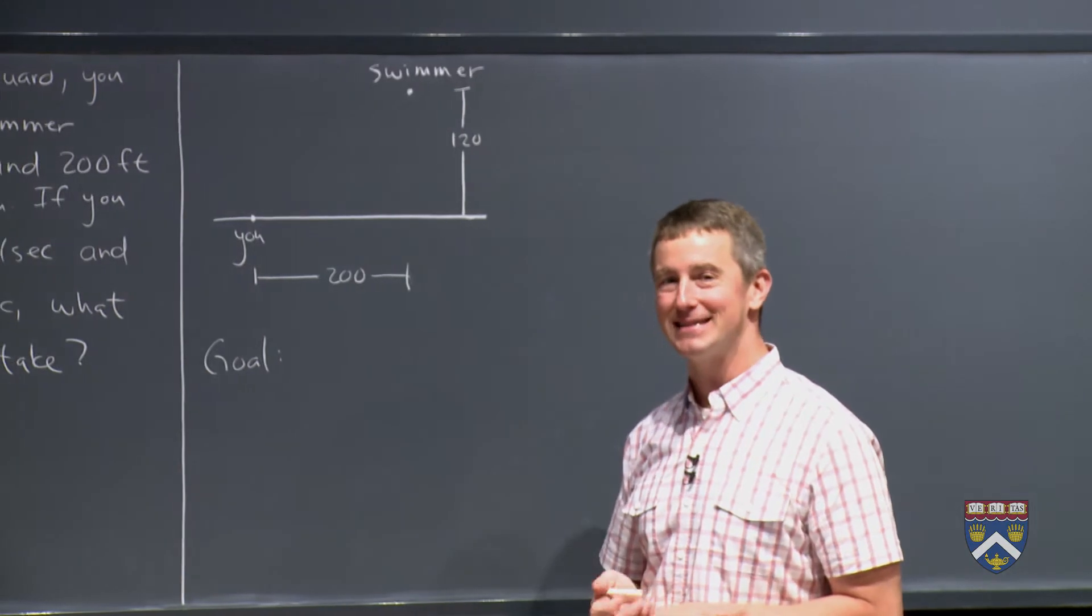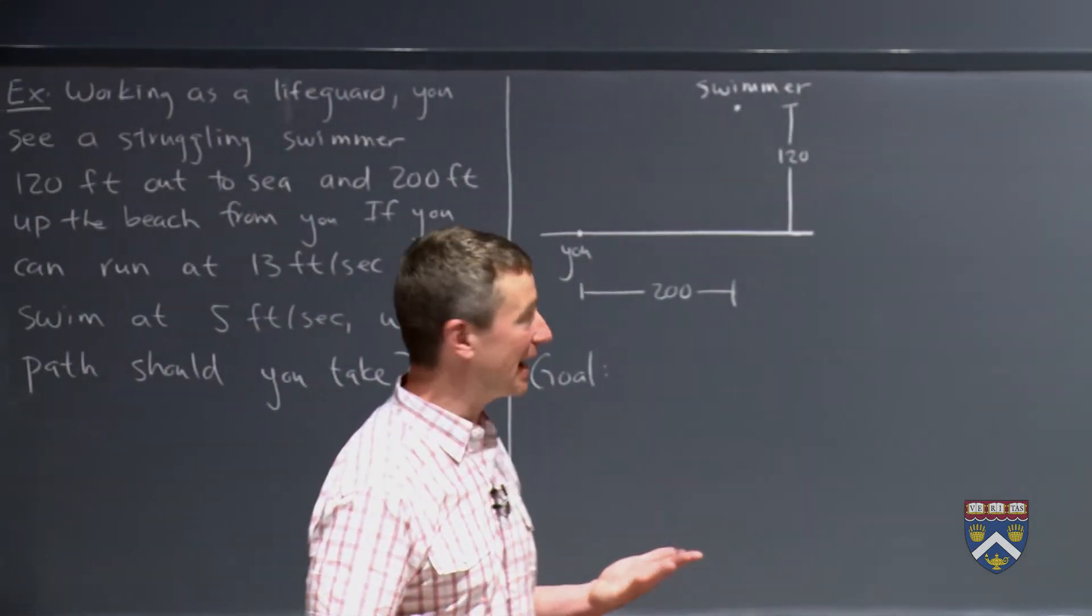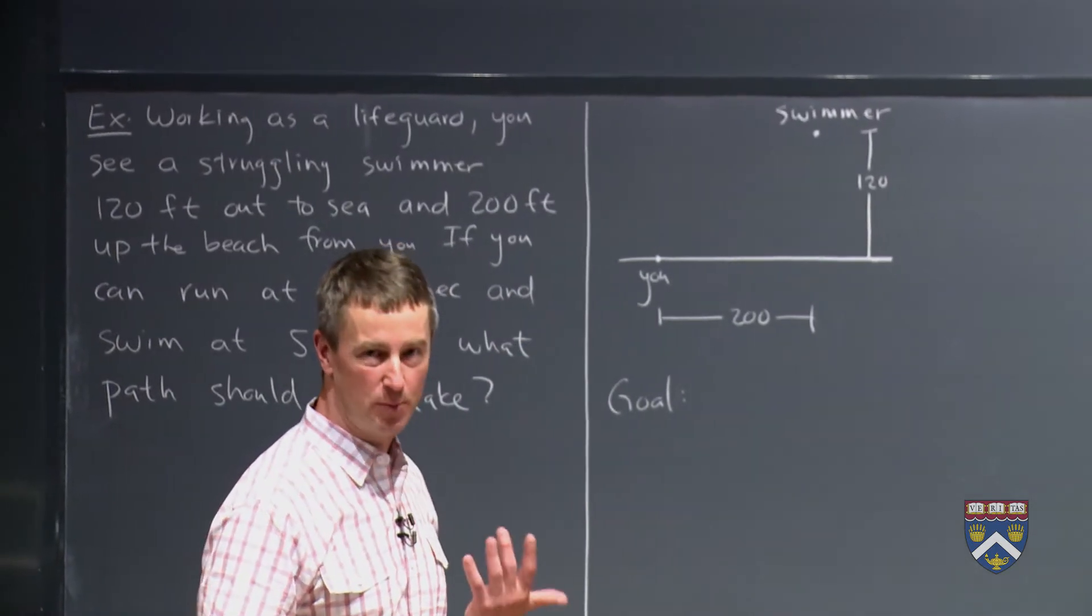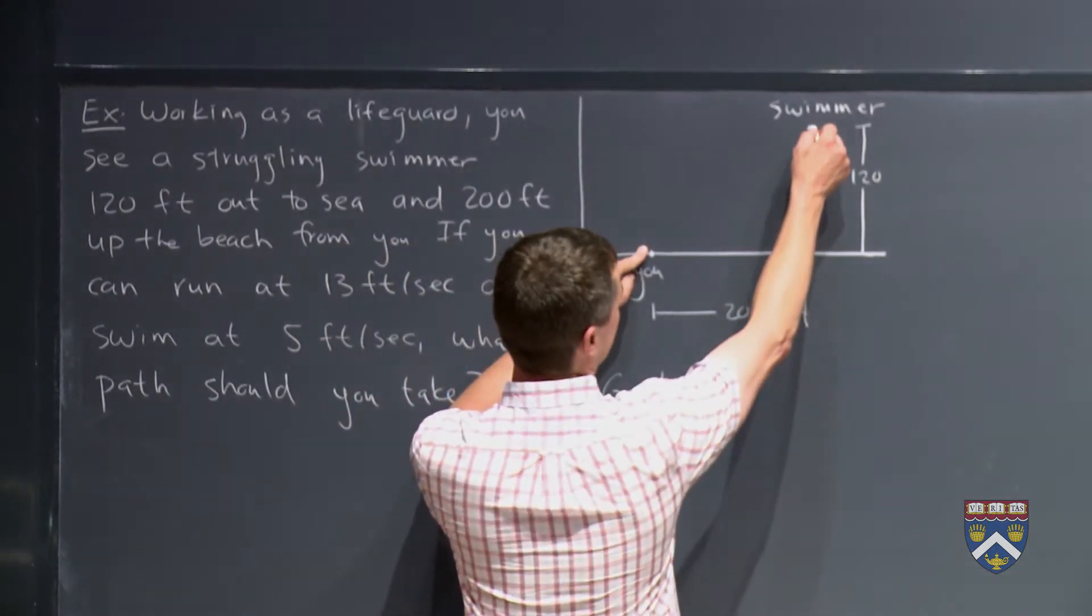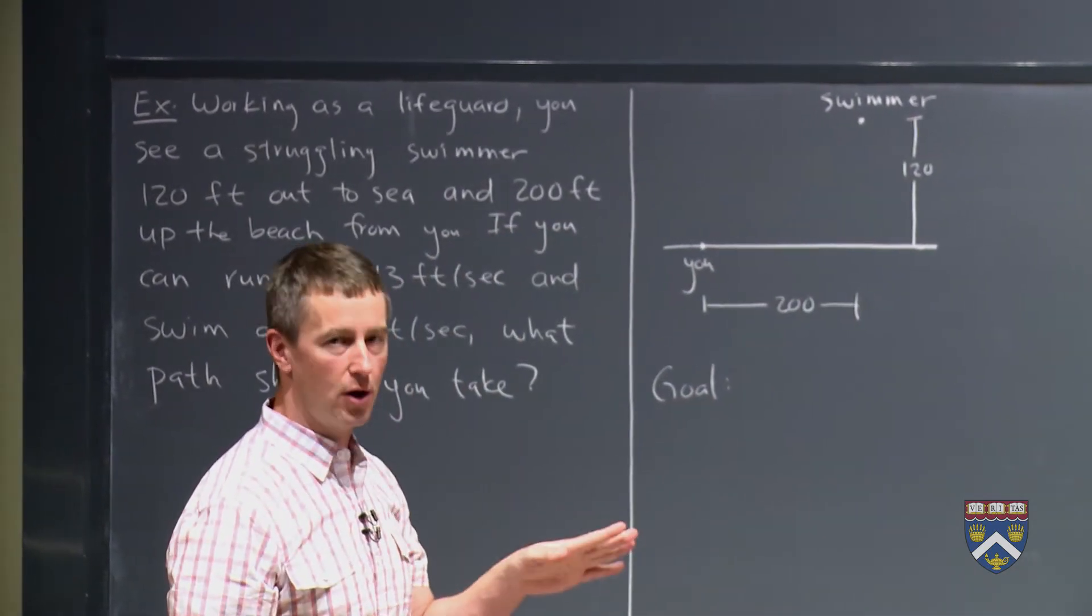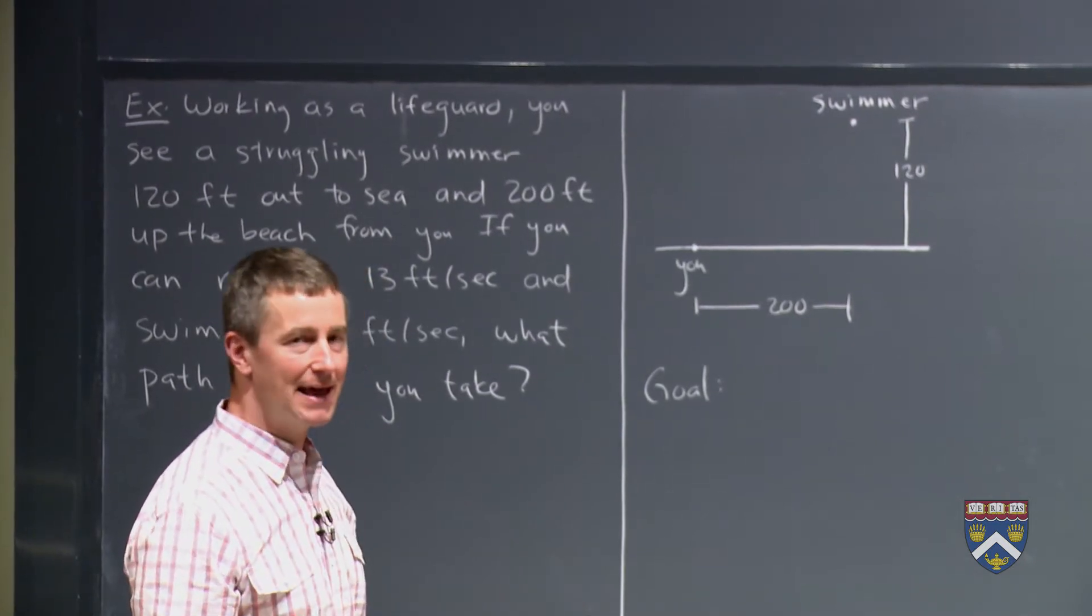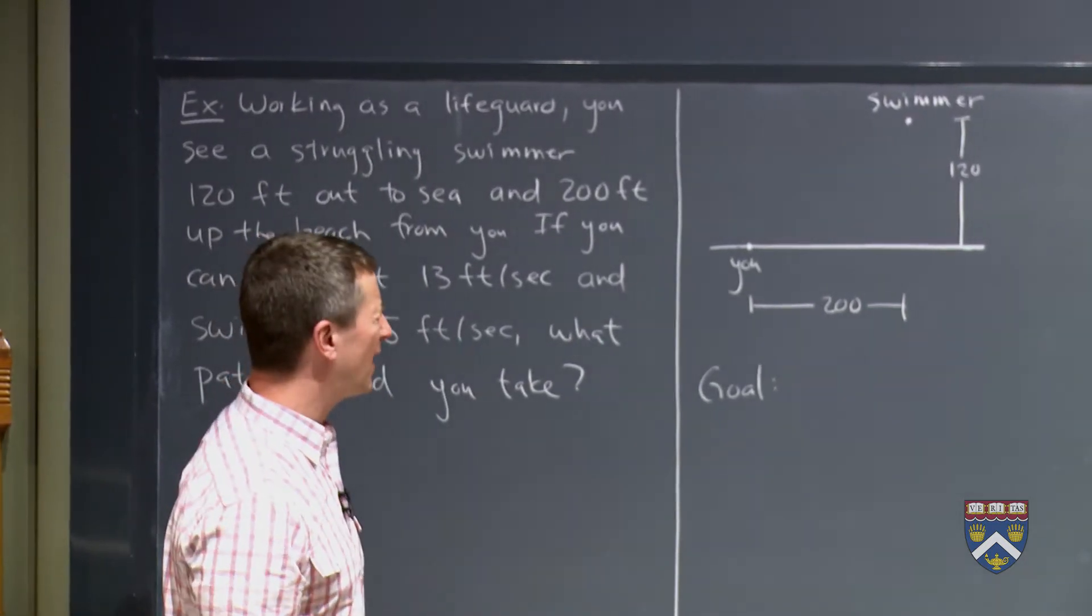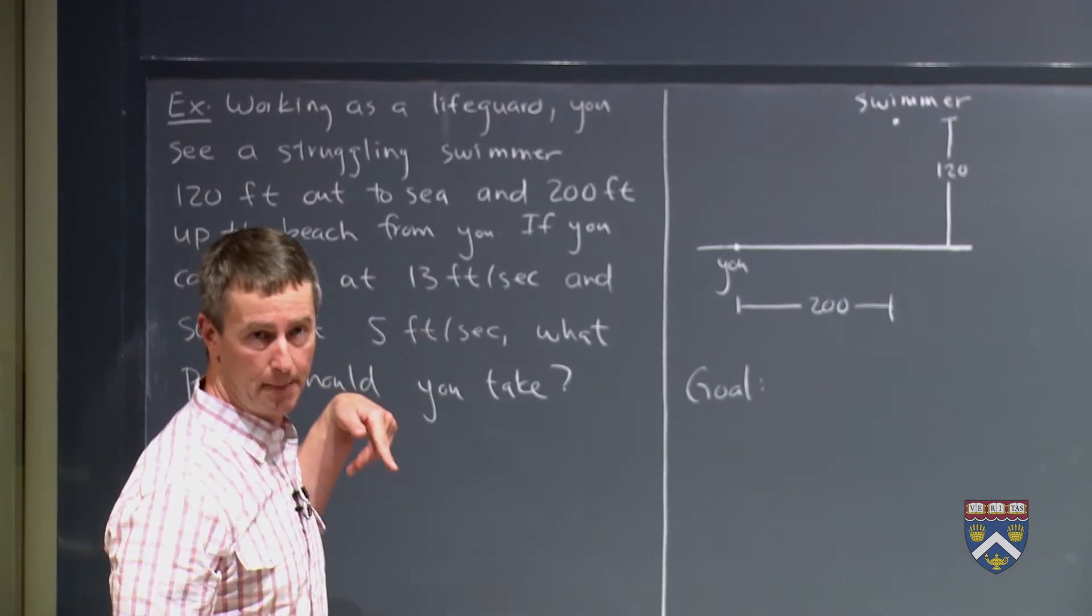Is the goal to minimize the distance? We know that in normal Euclidean geometry, the shortest distance between two points is a straight line. So to minimize the distance, you would just go straight like that. You wouldn't run at all. You would just swim. But why isn't it obvious that that's the right answer? Because you can run so much faster than you can swim.